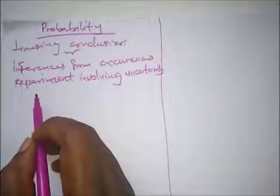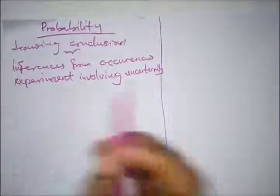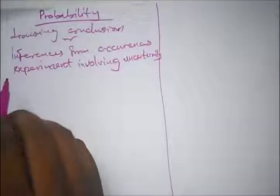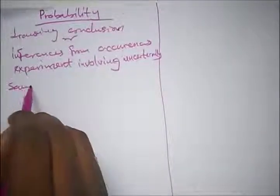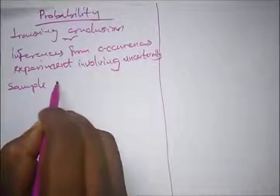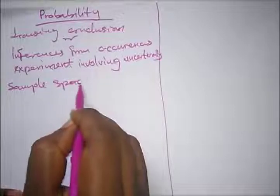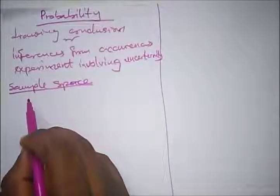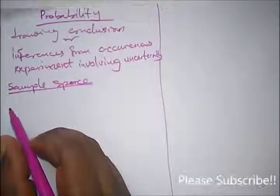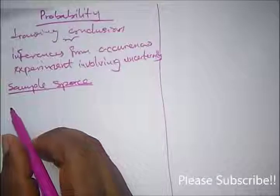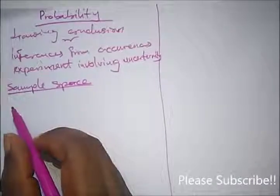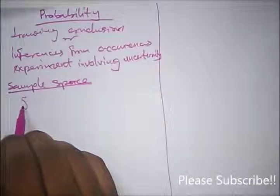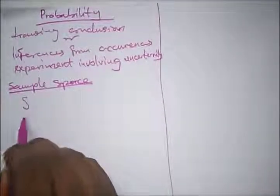In probability there are basic terms used, so I'm just going to go through and define them. First, what is a sample space? A sample space is a set whose elements represent all possible outcomes of an experiment, usually denoted by S.